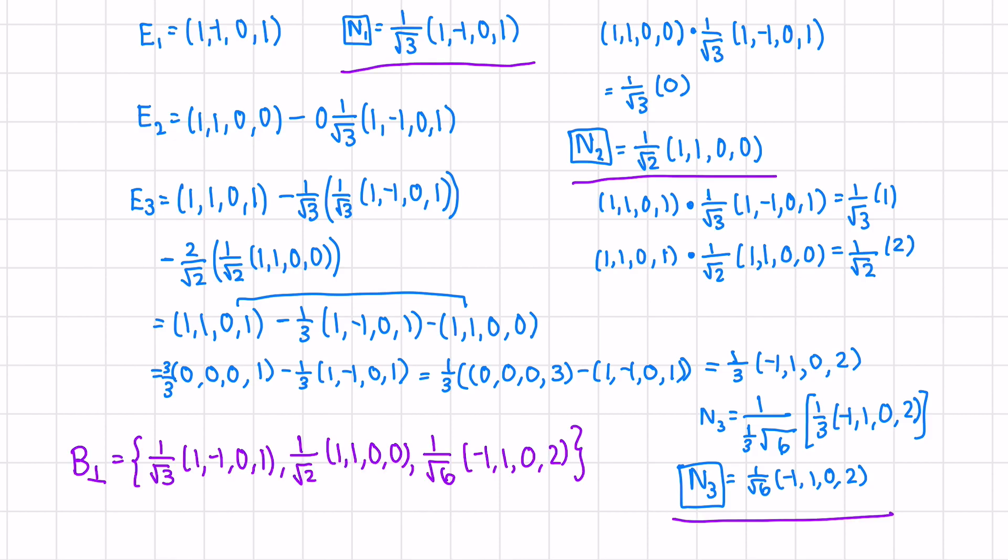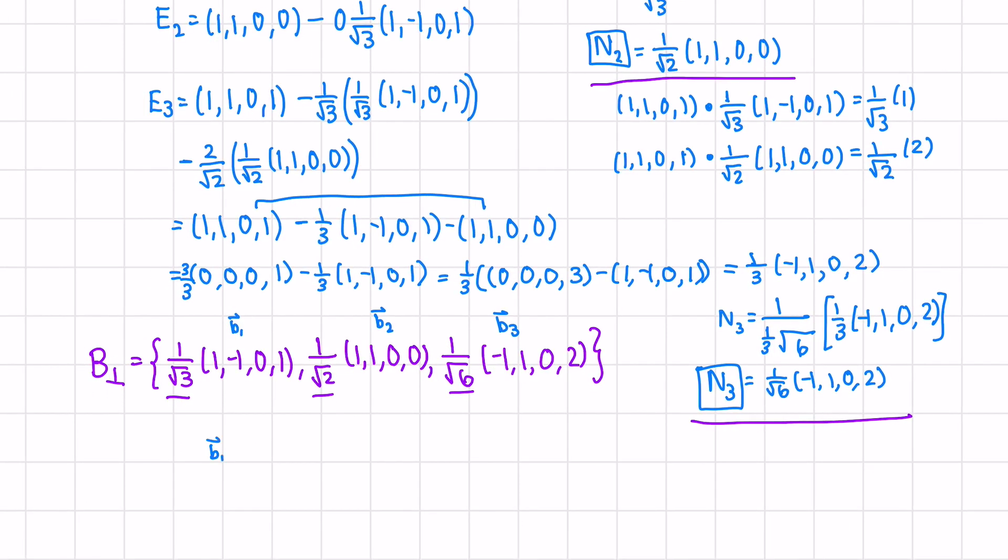If we just wanted an orthogonal and not an orthonormal basis, we could just delete these scalars. If we call this b_1, b_2, and b_3, we could check the vectors are mutually orthogonal. b_1 dot b_2 equals 0, b_1 dot b_3 equals 0, and b_2 dot b_3 is also 0, and we see that this is true.